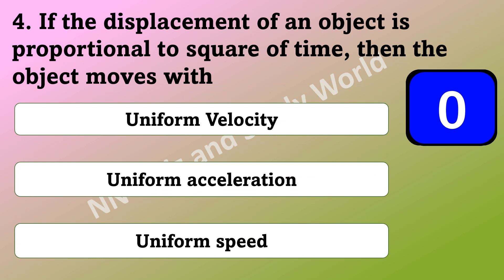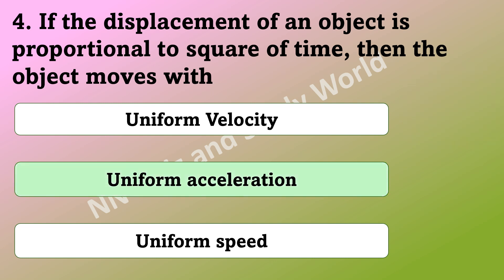If the displacement of an object is proportional to square of time, then the object moves with uniform velocity, uniform acceleration, or uniform speed? The answer is uniform acceleration.